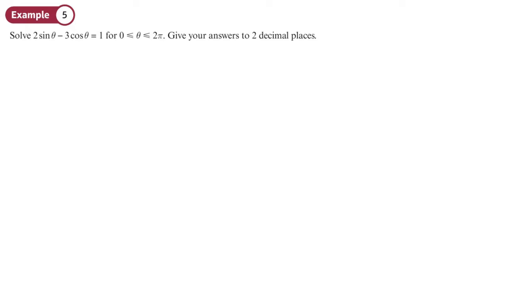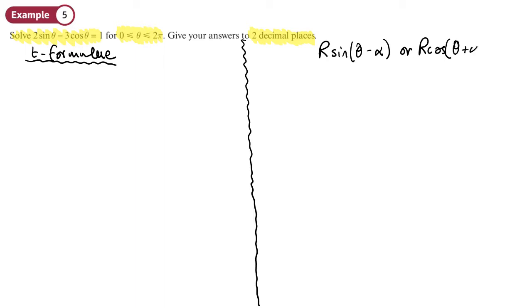So here it says solve this equation. Our solutions need to be between 0 and 2 pi and to two decimal places. This actually doesn't say which method we need to use to solve this equation, so we're going to show you two ways using the T formulae.